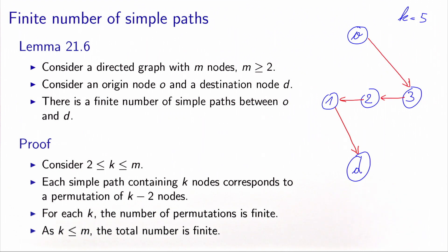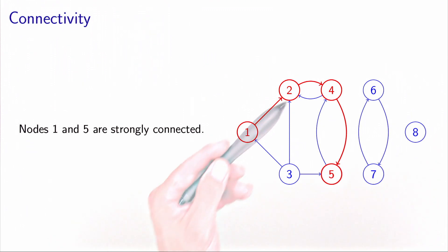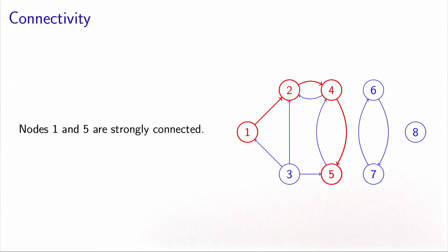The next concept is connectivity. Connectivity is about the existence of a path connecting two nodes. We start with the concept of strong connectivity. Two nodes are strongly connected if there exists a forward path between the origin and the destination. In this case, node one and node five are strongly connected because the path in red is a forward path.